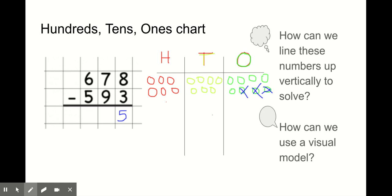What about from the tens? Can I take 9 away from 7? No, I can't. So again, I need to take a hundreds disk. And now, I'm going to move those hundreds disks into tens disks. 10, 20, 30, 40, 50, 60, 70, 80, 90, 100.